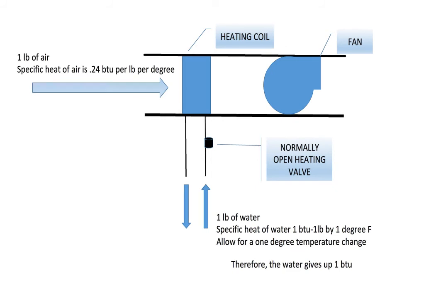At the same time, we will pass one pound of air across the coil. The specific heat of air is 0.24. That is, it takes 0.24 BTU to change the temperature of one pound of air by one degree Fahrenheit. 0.24 BTU is very close to a quarter of a BTU.